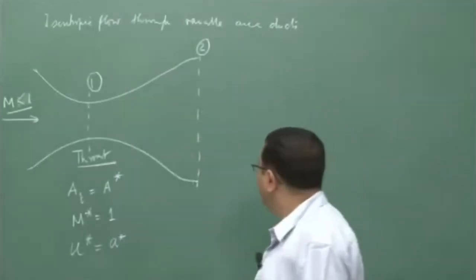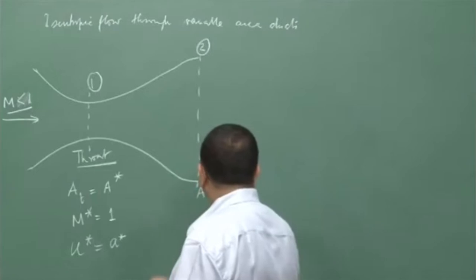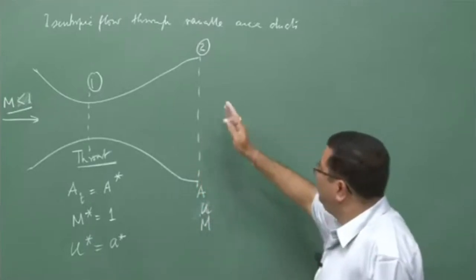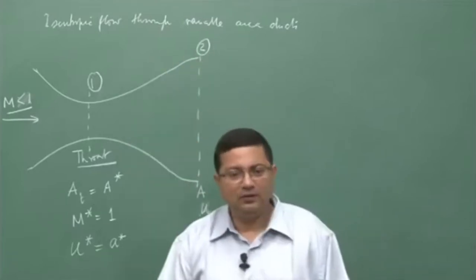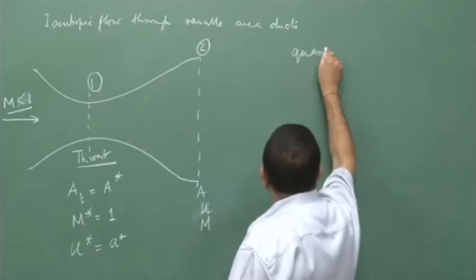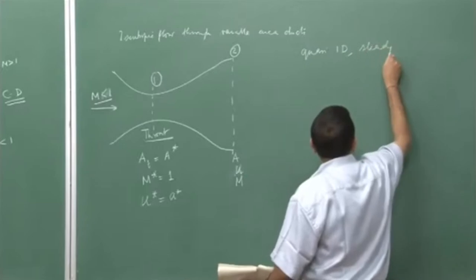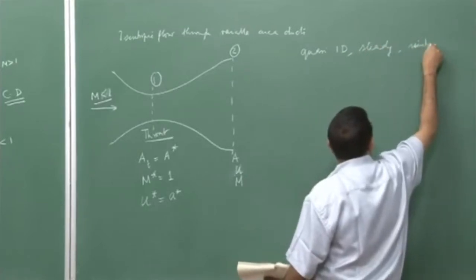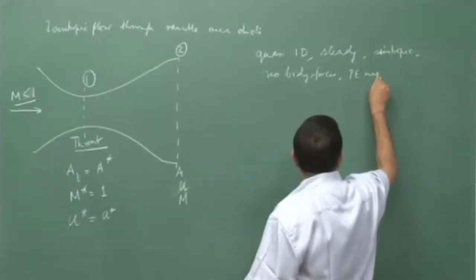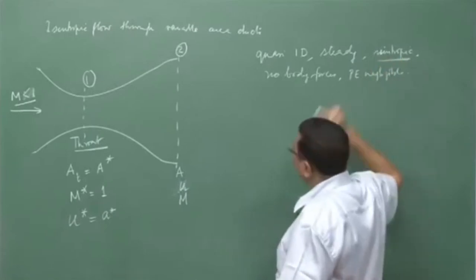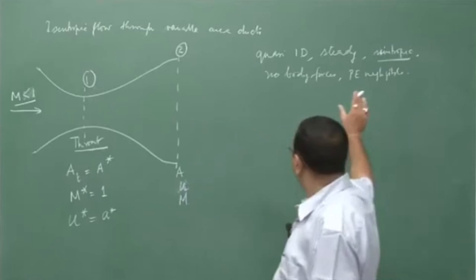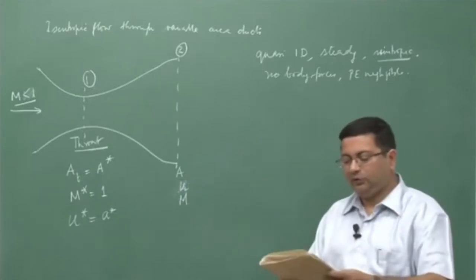At the throat, the speed of sound equals the velocity at that location. At exit point 2, the area is A, the velocity is u, and the Mach number is M — or these conditions apply at any location inside the nozzle. Let us consider the flow to be quasi-1D, steady, and isentropic with no body forces and negligible potential energy. Since it is isentropic, it is adiabatic and reversible — meaning frictionless or inviscid.